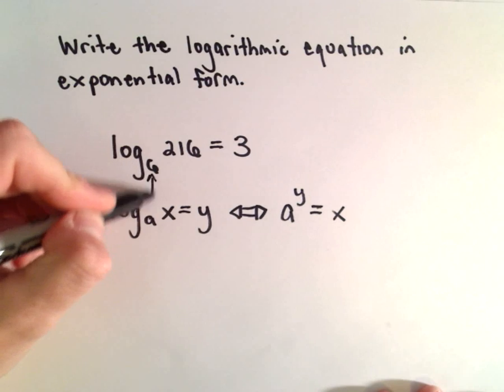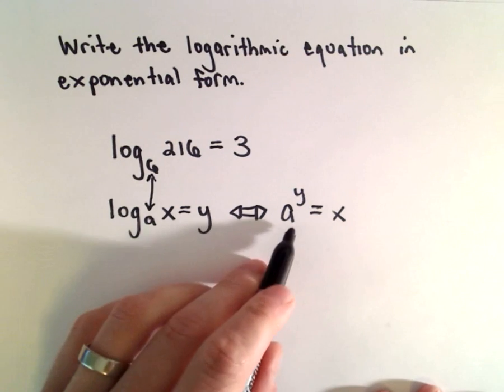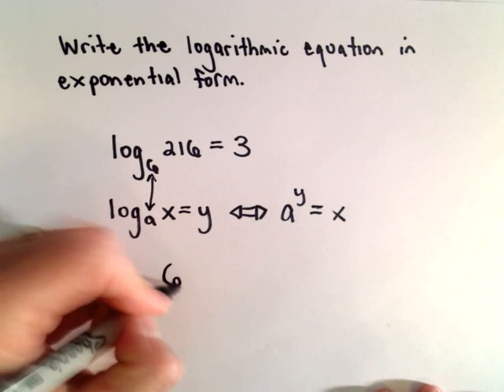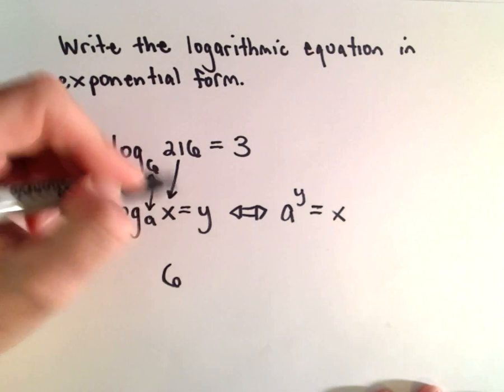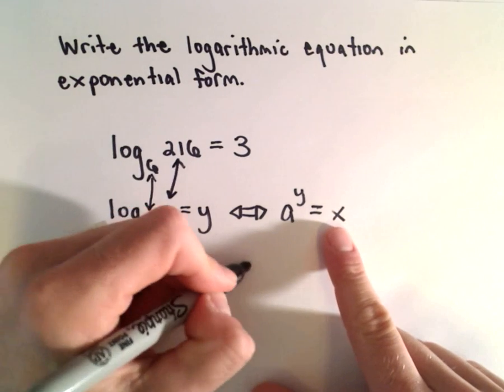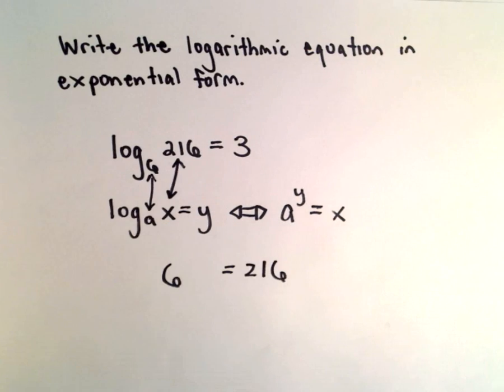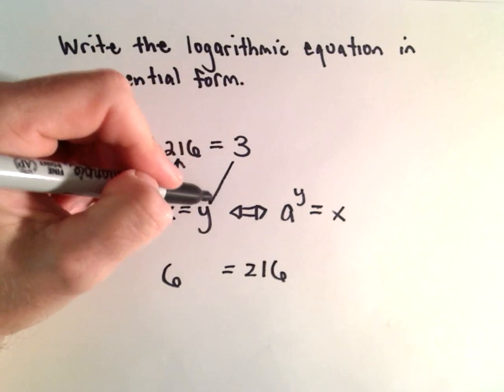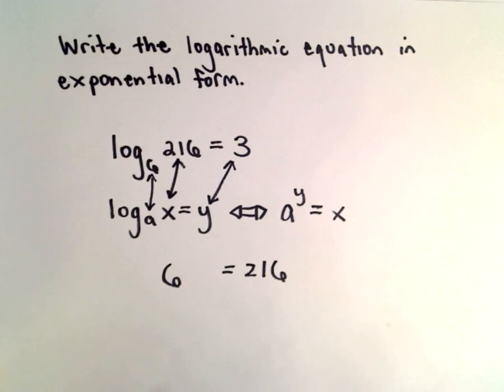So in this case our a value is going to equal positive 6. Our x value is going to be 216 and our y value is going to equal 3. So that's going to become our exponent.